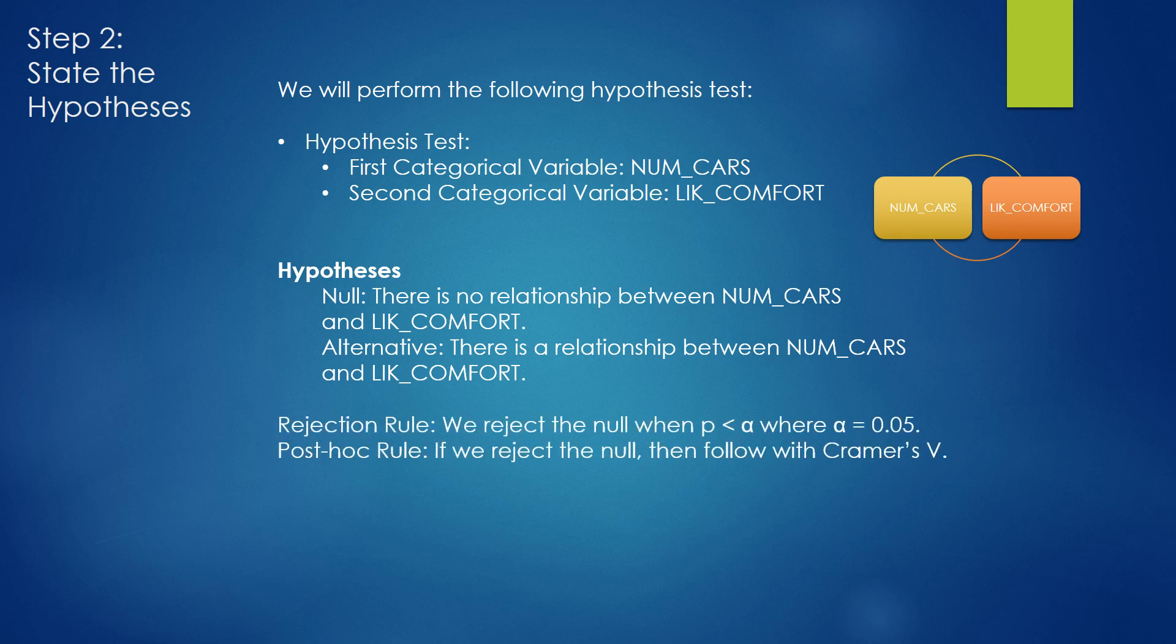We also have the usual rejection rule. If p is less than alpha, where alpha is equal to 0.05, we reject the null hypothesis. If p is greater than alpha, we fail to reject the null hypothesis. However, we have one additional modification. If we do reject the null, if p is less than alpha, we have to follow up with a measurement of Cramer's V. Cramer's V will tell us how strong the relationship is if we reject the null hypothesis.